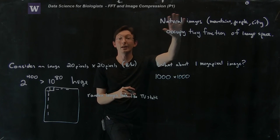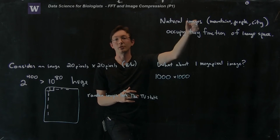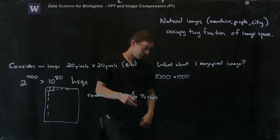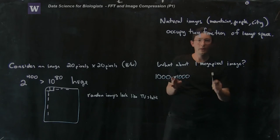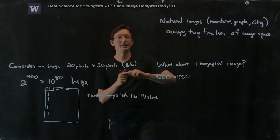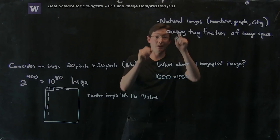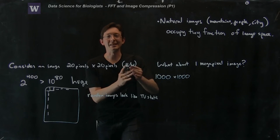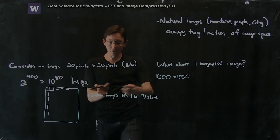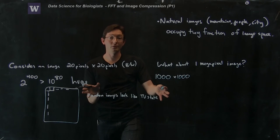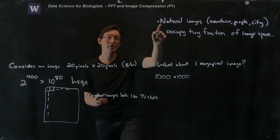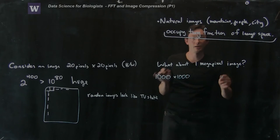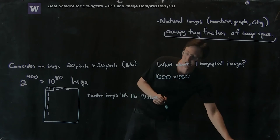And if I randomly sampled images from this megapixel image space, you can imagine doing this on your computer, you can even run an experiment in code, where you randomly generate megapixel images and then show them to yourself, you're never going to get an image of a mountain, or a person, or a city. You're definitely not going to get an image that makes sense. You're always going to get TV static if you randomly sample these images. Because the amount of these images that are just boring TV static dramatically outweighs the natural images. Chances are you'll never just randomly sample and get an interesting image of a natural image, or of this board with math on it.